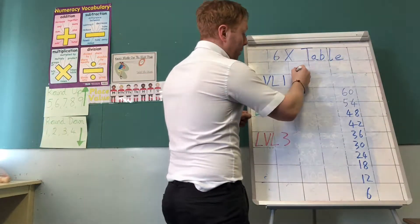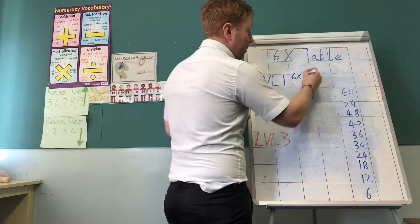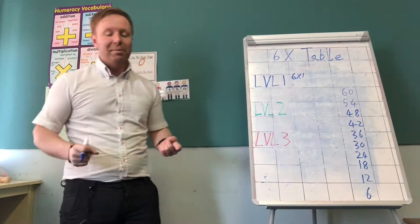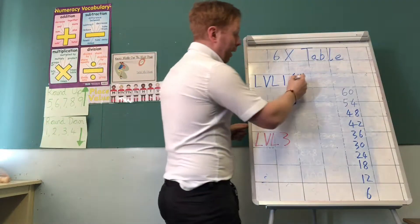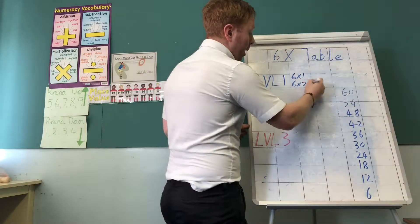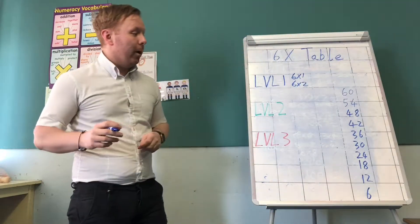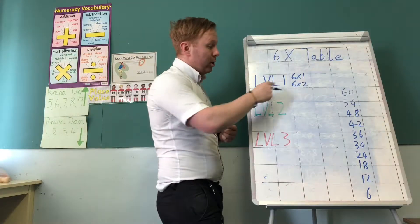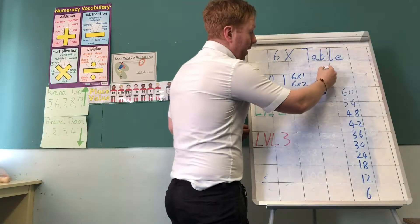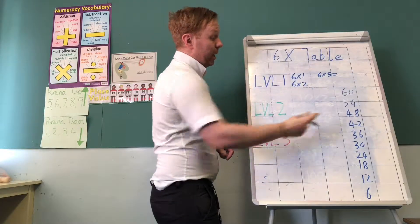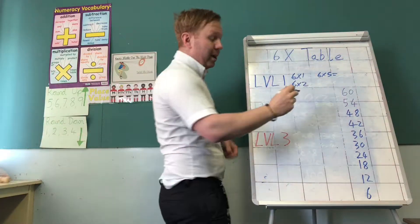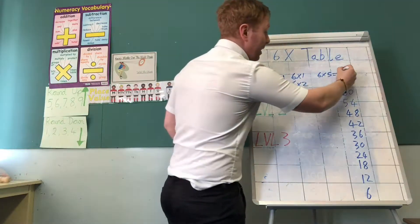So I always start 6 times 1. My 1 times table, easiest times table, 6 times 1 is 6. When we're learning to count it's the first number there. I bring in 6 times 2 as my next one. I've done my 2 times table so I know double 6 is 12. I then go to my middle man as I call it. 6 times 5. Learned my 5 times table. 6 times 5 is 30.